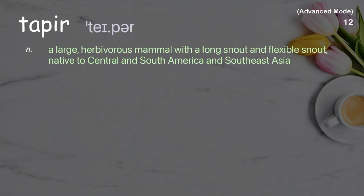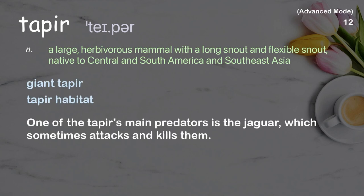Tapir: A large, herbivorous mammal with a long, flexible snout, native to Central and South America and Southeast Asia. Examples: giant tapir, tapir habitat. One of the tapir's main predators is the jaguar, which sometimes attacks and kills them.